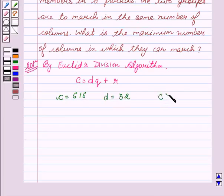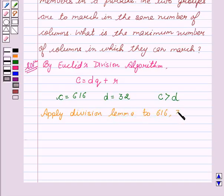As we all know that C should always be more than D. Now, we will apply division lemma to 616 and 32.